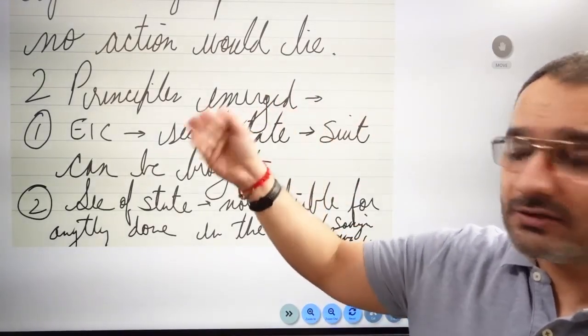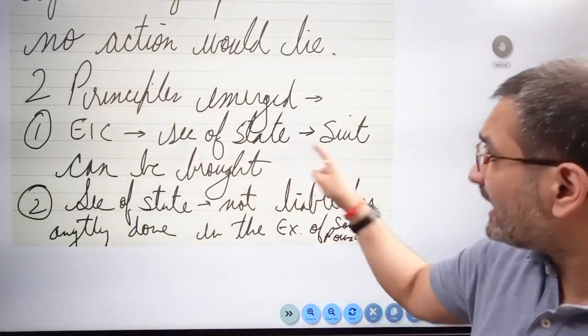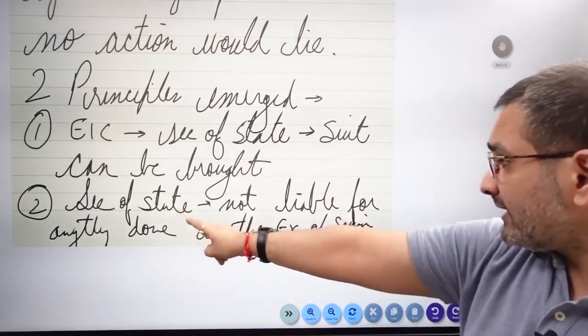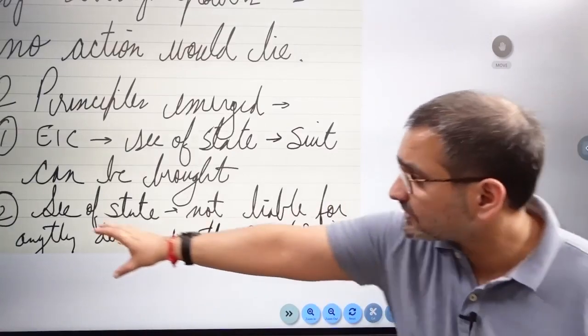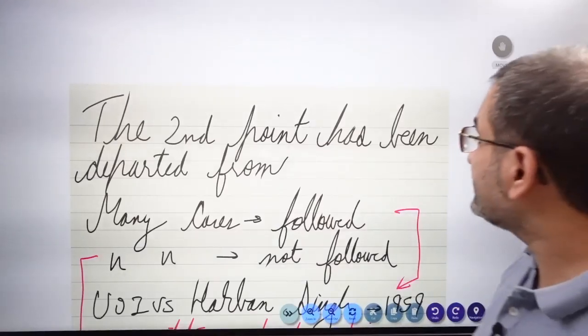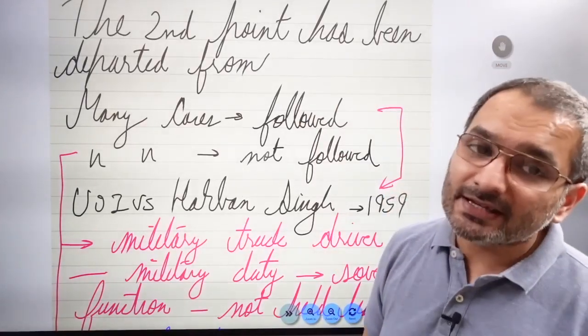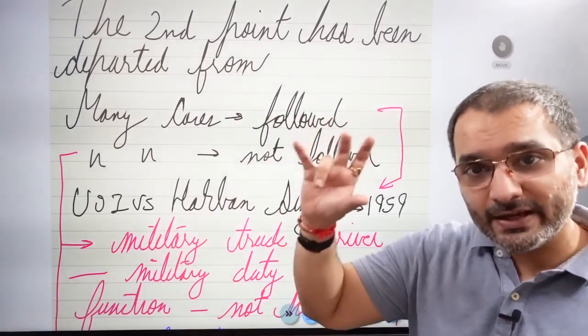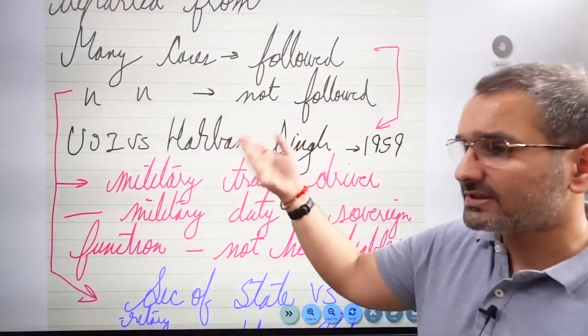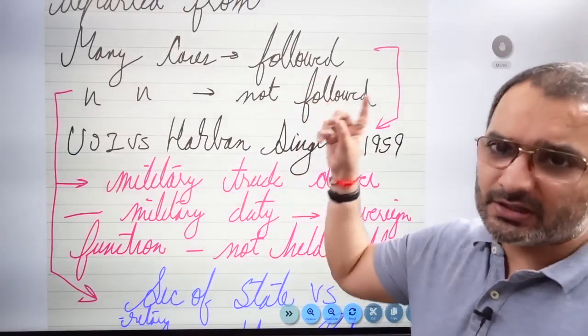This is not the law now. We are tracing the history of the law. Two principles emerge: East India Company and the Secretary of State will be liable, and the Secretary of State is not liable for anything done in the exercise of sovereign power. Write this second point down. This second point has been departed from over the course of years. This is also one of the cardinal case laws on sovereign immunity.